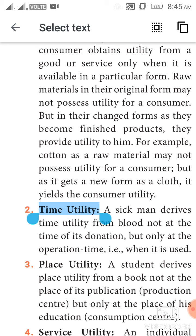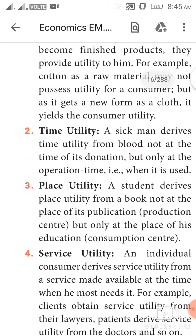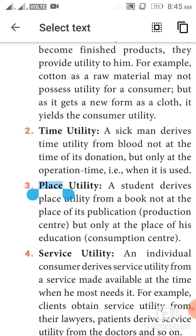Time utility: a sick man derives time utility from blood not at the time of its donation, but only at the operation time — that is when it is actually used. Place utility: a student derives place utility from a book not at the place of its publication or production center, but only at the place of his education or consumption center.